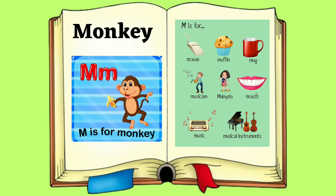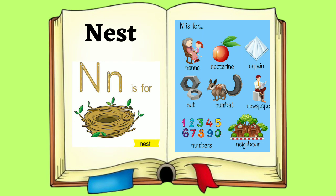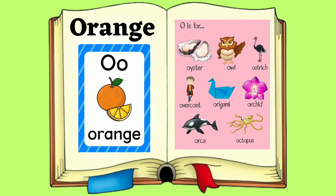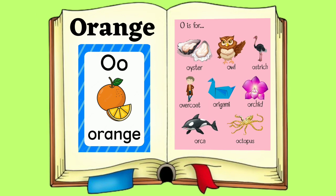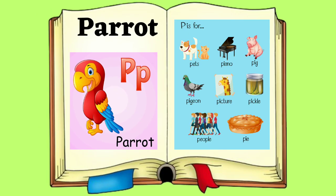Lion. M for Monkey. M, M. Monkey. N for Nest. N, N. Nest. O for Orange. O, O.